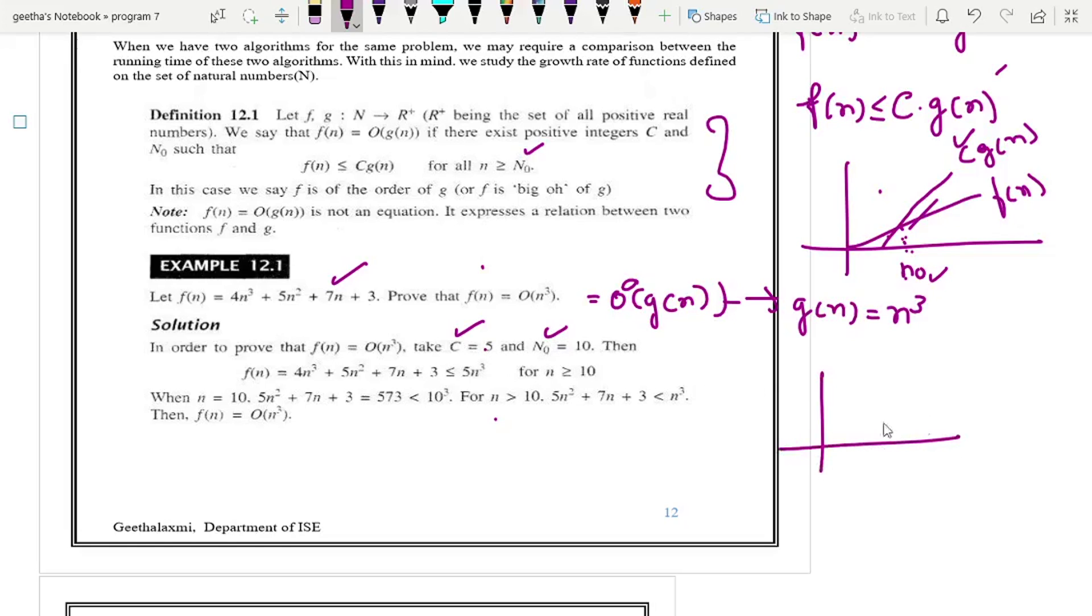And your f of n, what is f of n? This one. I will write randomly that this is a line for 4n cube plus 5n square plus 7n plus 3 and your c into g of n can be in this manner. C into g of n is c n cube, 5n cube is somewhere comes here where n naught is 10.